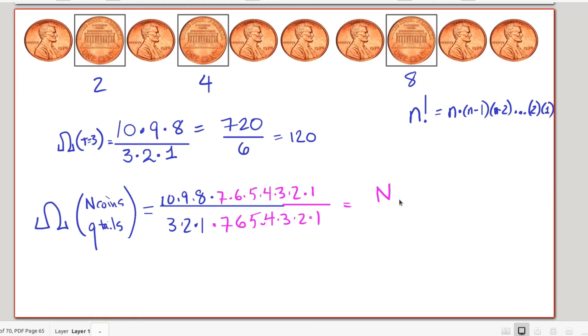This makes it possible to write this in a much nicer form. I can say that this is n factorial in the numerator, 10 through 1, and then I have 7 factorial times 3 factorial. That is q factorial, the number of tails, 3 times 2 times 1, times n minus q factorial, the number of factors we needed to multiply by. So this is a general formula for the multiplicity of having q tails when I have n coins.